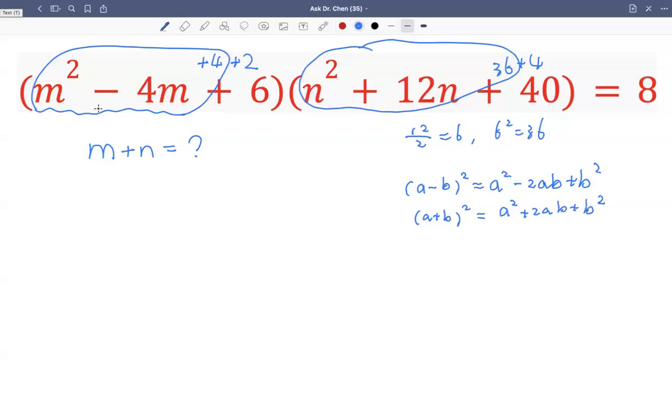In our case we have m, so this first one is m minus 2. Because negative 4m, that's negative 2ab. And a is m, so negative 2b equals negative 4m in this case. So that's why we have 2. So m minus 2 squared plus 2, since 6 minus 4 we have 2 left.